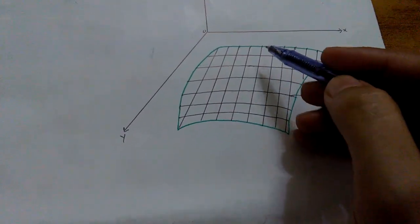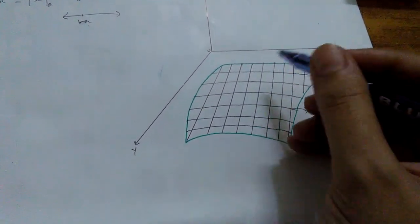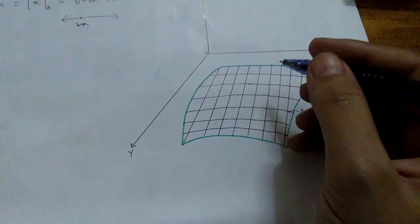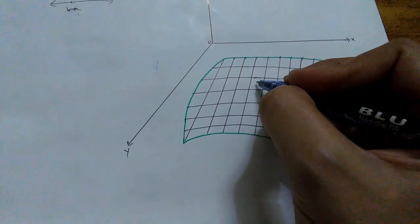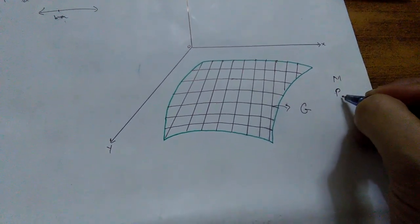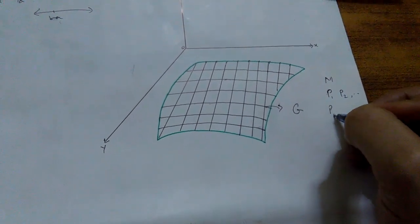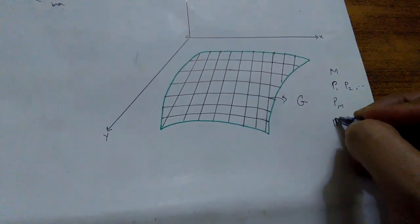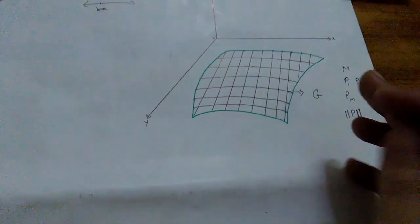Let me draw the partitions on this entire plane G lying on the xy-plane, making sure their dimensions or size are very constant — they must not vary. You can see there are approximately m number of partitions, and I call each partition P with values in the subscript: p1, p2, up to pm partitions. The size of the partition is represented by a norm — this notation represents the magnitude or the area of the partition.